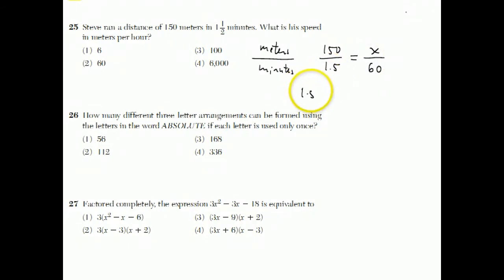You can finish this question up by cross-multiplying. 1.5x equals 60 times 150, which is 9,000. Then you divide both sides by 1.5. Which you can do on your calculator. 9,000 divided by 1.5 is 6,000, which is choice number 4.